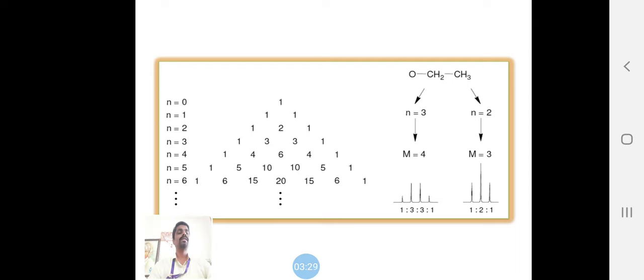CH2 that is 2 plus 1 equals 3. We are getting 4 and 3 signals ratio. That ratio - M equals 4 means magnetic quantum number is 4, means 1:3:3:1.